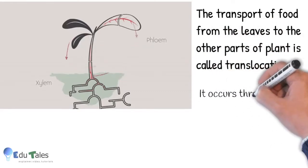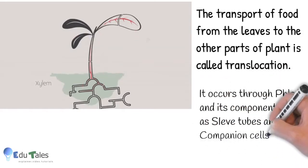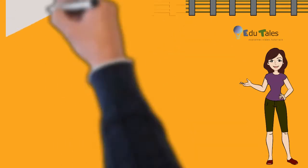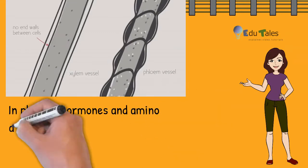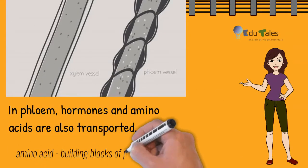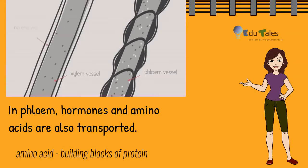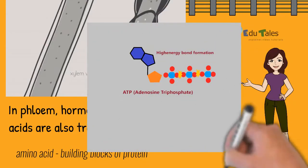It occurs through phloem and its components such as sieve tubes and companion cells. Remember, in phloem the food gets transported in both directions, that is upwards and downwards. In phloem, besides food, other hormones and certain amino acids also get transported. However, this movement of food takes place by utilizing energy in the form of ATP, that is adenosine triphosphate.